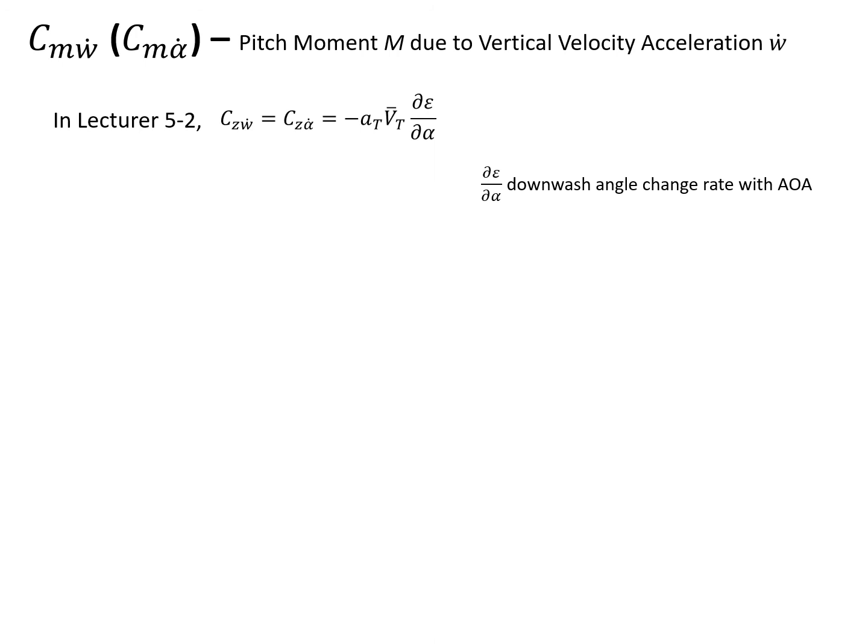Now let's look at the last derivative: CMW dot, or we can take it as CM alpha dot, the pitching moment change due to vertical velocity acceleration. We can replace W dot by alpha dot as described in lecture 5-2. In the previous lecture we have CZW dot derived. It's minus AT times elevator volume times partial epsilon partial alpha, where partial epsilon partial alpha is the downwash angle change rate with angle of attack change.